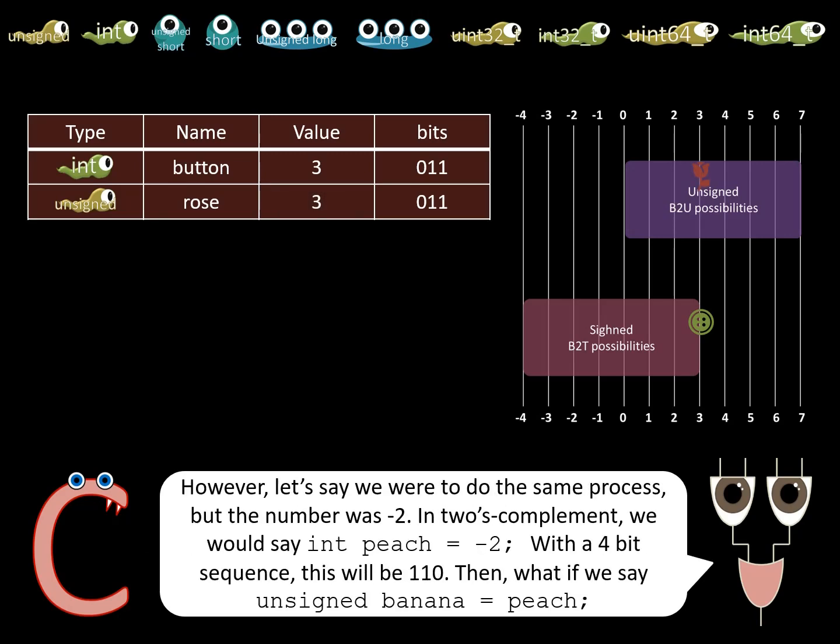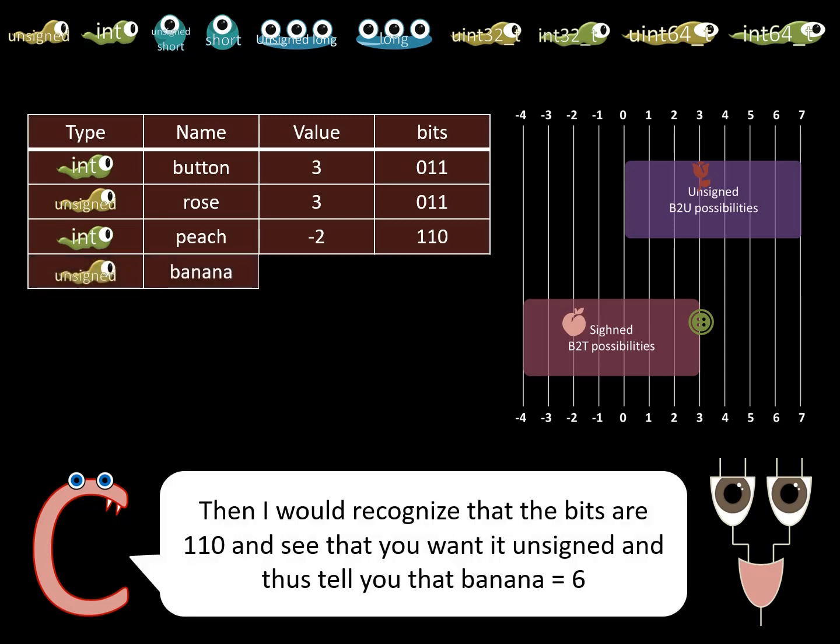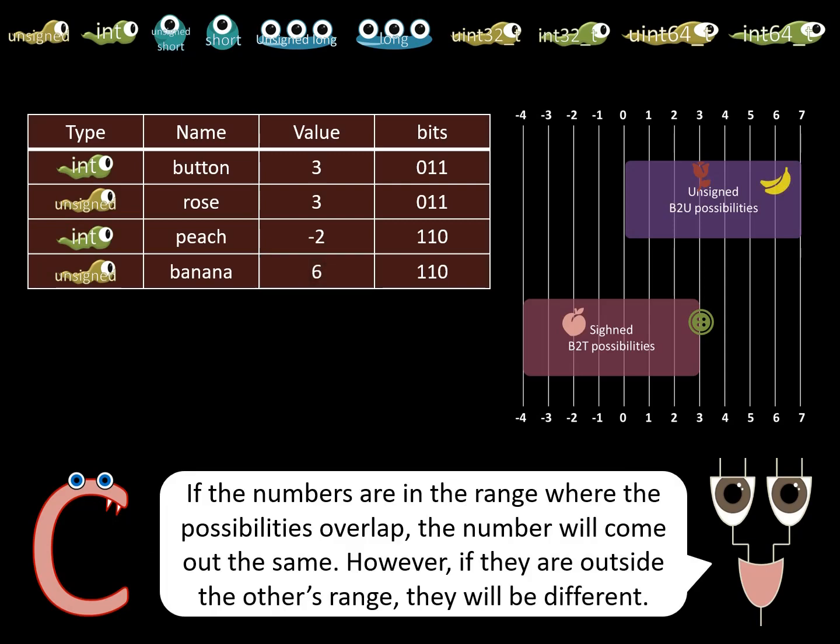However, let's say we were to do the same process, but the number was -2. In two's complement, we would say int peach = -2. With a 4-bit sequence, this will be 110. Then, what if we say unsigned banana = peach? Then I would recognize that the bits are 110, and see that you want it unsigned, and thus tell you that banana equals 6. If the numbers are in the range where the possibilities overlap, the number will come out the same. However, if they are outside the other's range, they will be different.